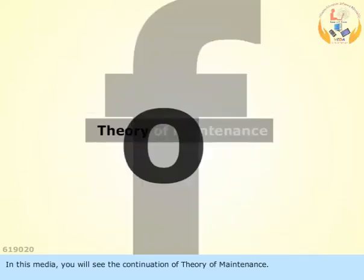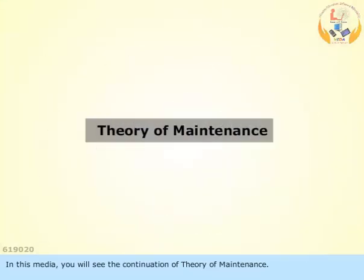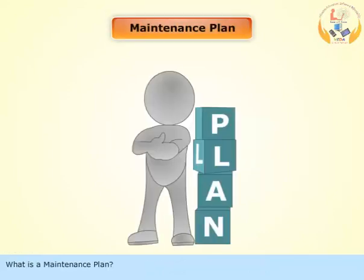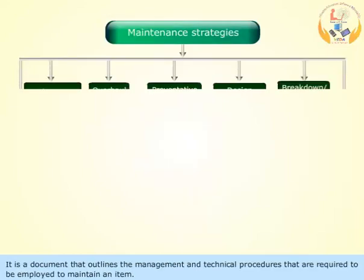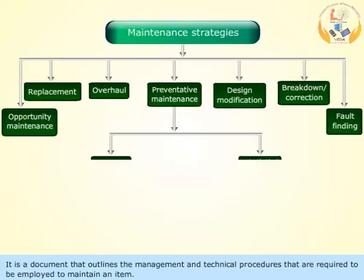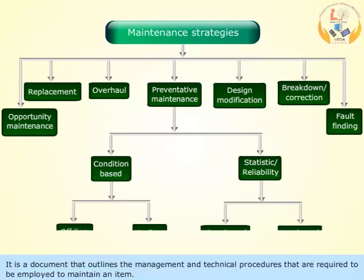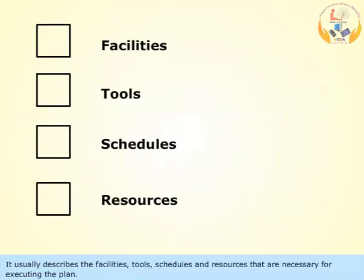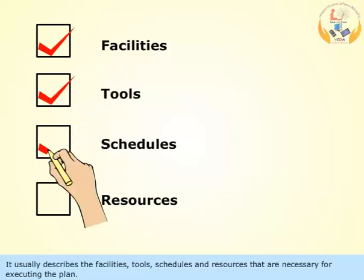In this media, you will see the continuation of Theory of Maintenance. What is a maintenance plan? It is a document that outlines the management and technical procedures that are required to be employed to maintain an item. It usually describes the facilities, tools, schedules and resources that are necessary for executing the plan.